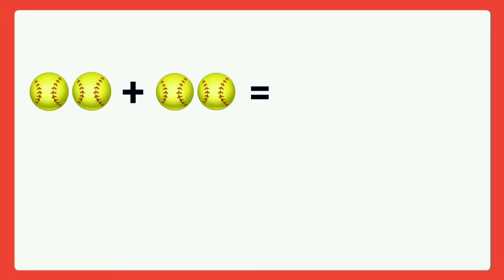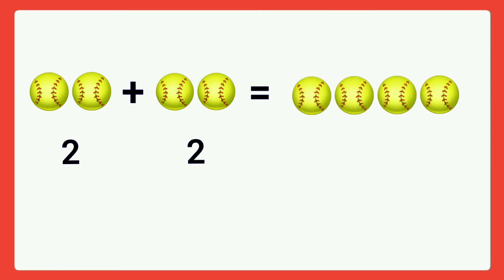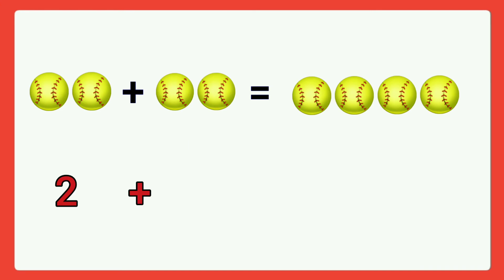Next, picture addition. Here two sets of balls are given. We want to add all together. In the first set, how many balls? One, two. Write number two in the first set. Then second set, how many balls? One, two. Write two. Then total, let's count: one, two, three, four. So two plus two is equal to four.